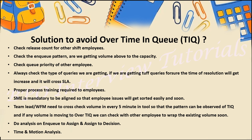Check the release count for other shift employees — this is mandatory. Check that particular agent ID and find out why they released, and what comment they added before releasing. Check enqueue patterns and match capacity accordingly. Also, always check the type of queries arriving — if tough queries are coming in, resolution time will increase and SLA will be breached. For example, on a Big Billion Day for Flipkart, most calls will be about order purchase issues like payments deducted but orders not confirmed — these calls extend your SLA.